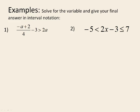Let's take a look at some examples: solve for the variable and give your final answer in interval notation. Remember that inequalities behave like equations — we can add and subtract things from both sides. The only time we have a problem is if we multiply or divide by a negative number. This example has a fraction; the LCD is 4, so we multiply both sides of the inequality by 4. That leaves negative A plus 2 on the left; 4 times negative 3 is negative 12, and 2A times 4 is 8A.